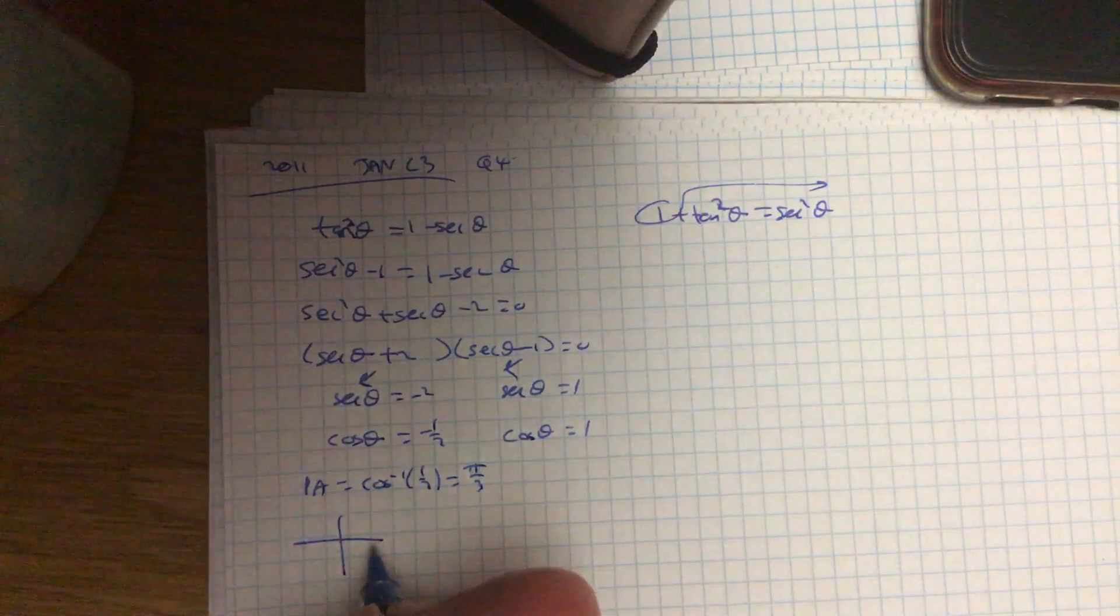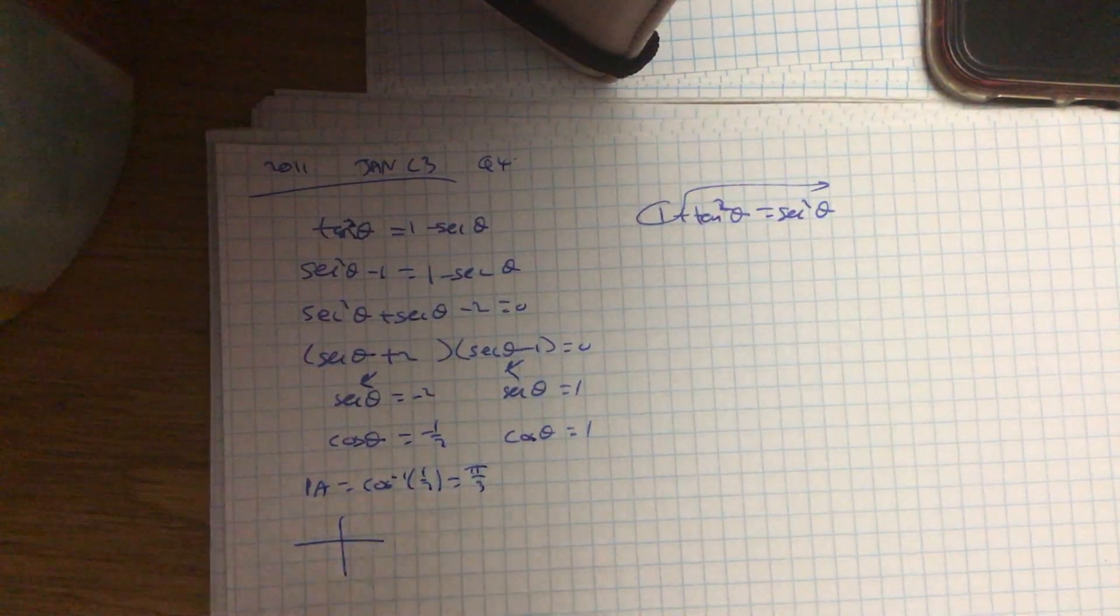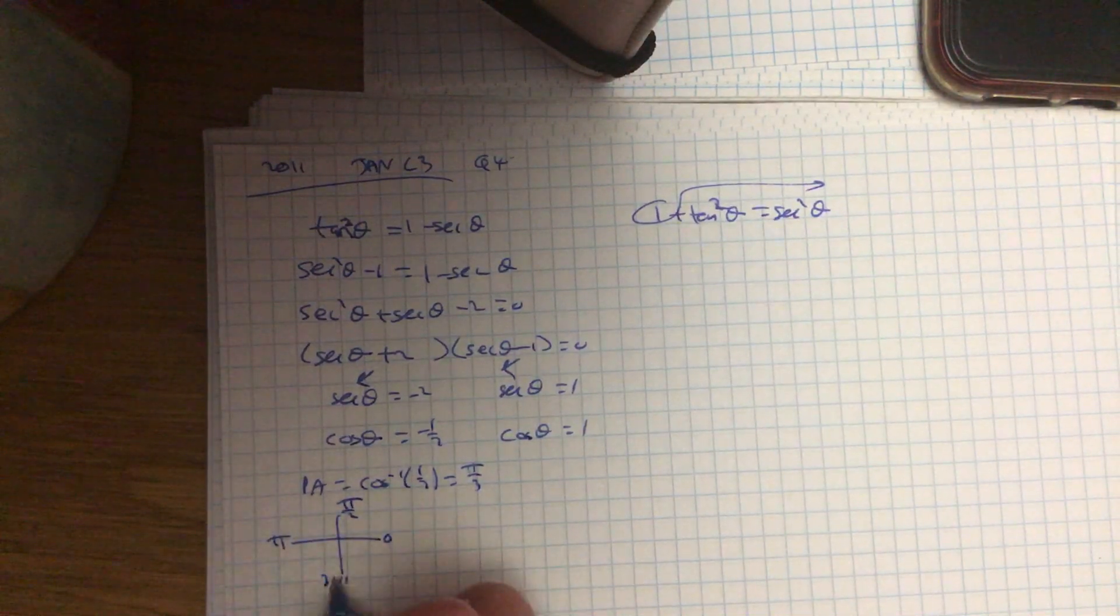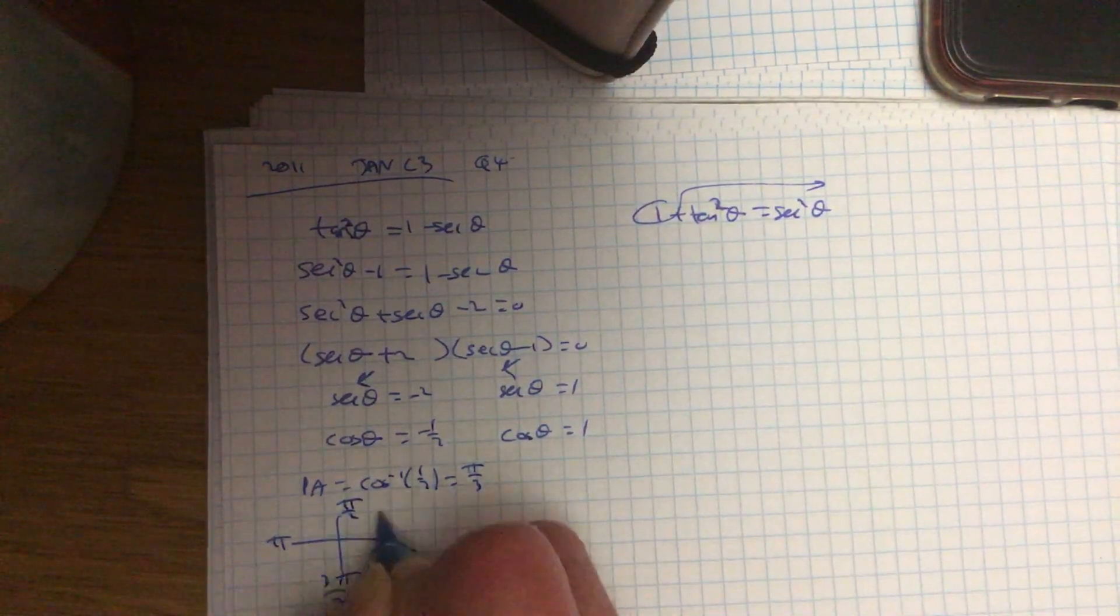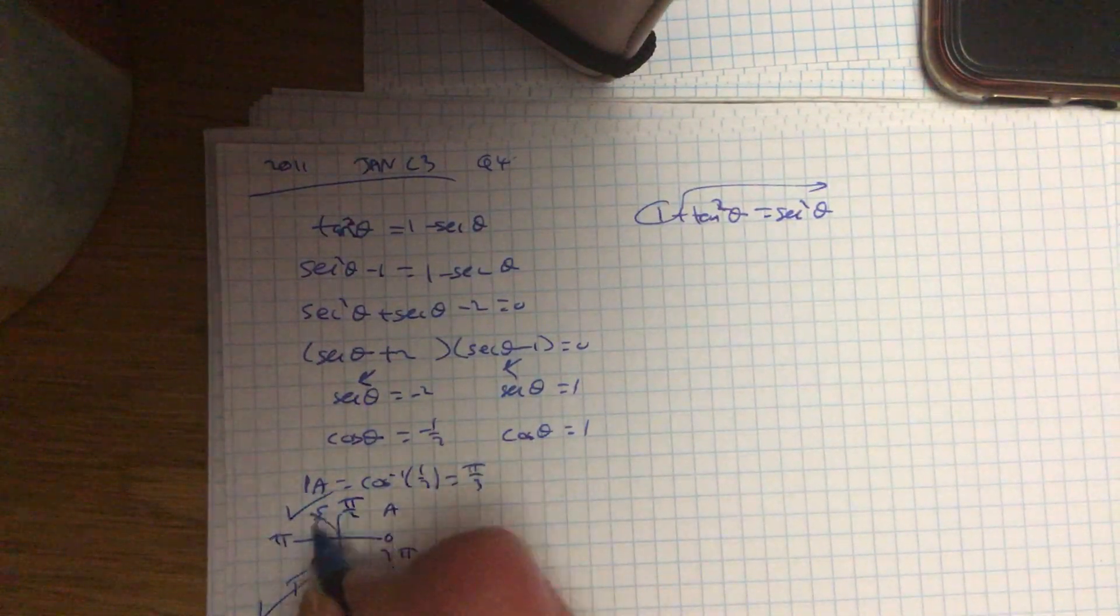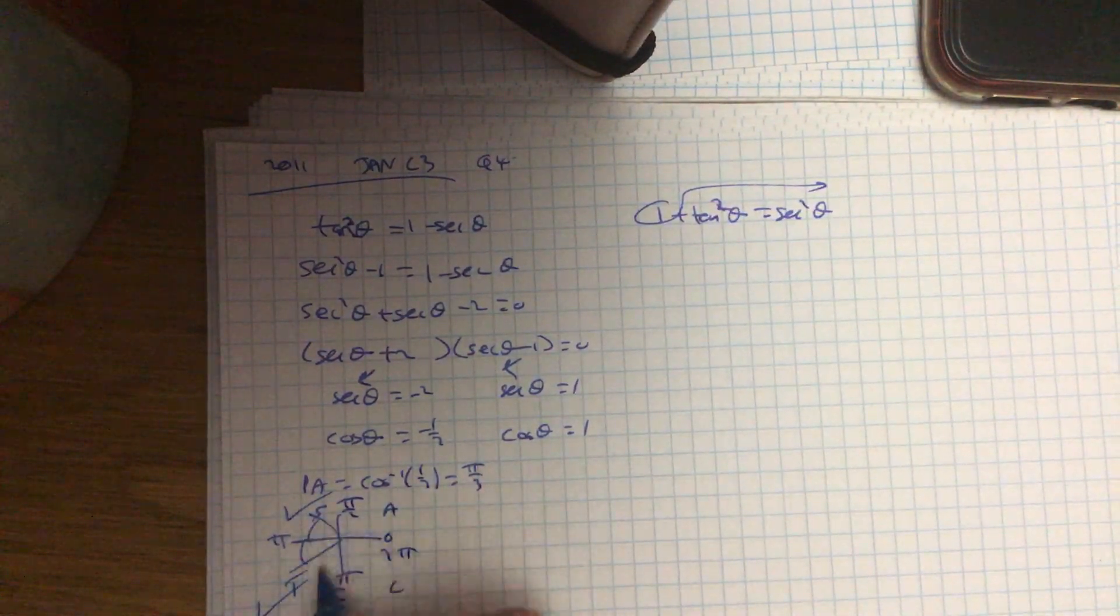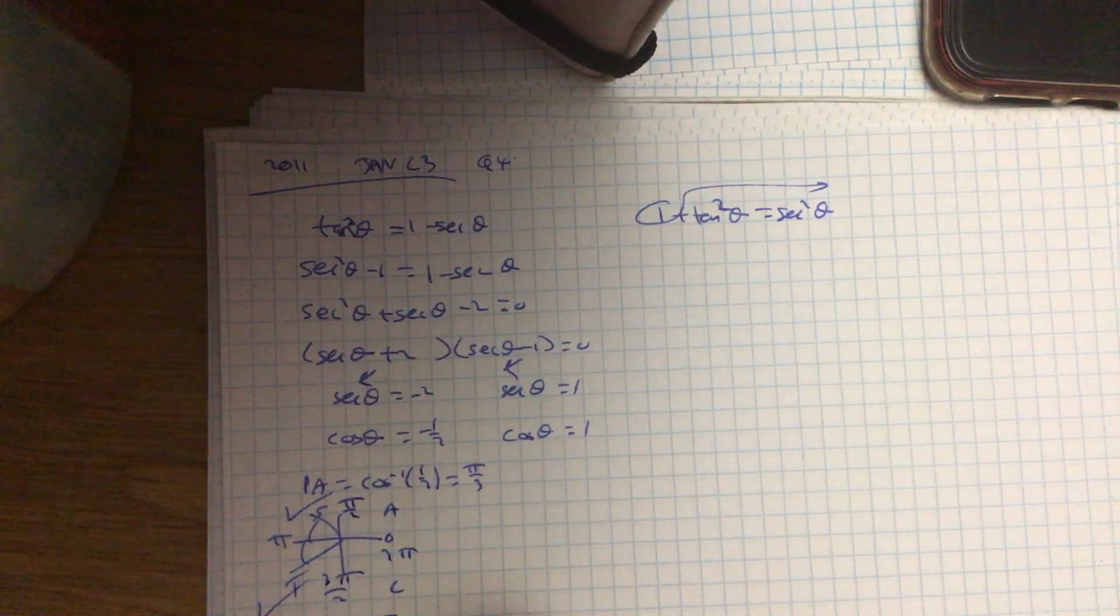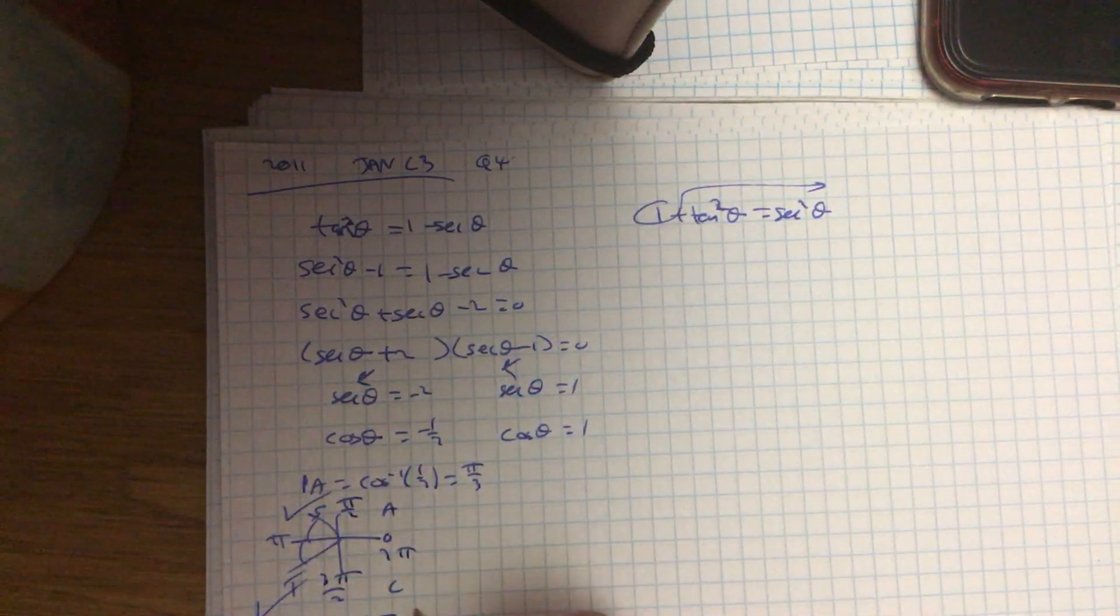Your interval ran from 0 to pi, so just go around and use CAST the normal way: C, A, S, T. Cos was negative, so it's these two quadrants. Your first answer is pi minus pi over 3, and the second answer is pi plus pi over 3.